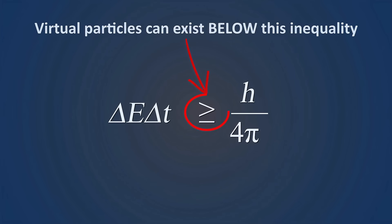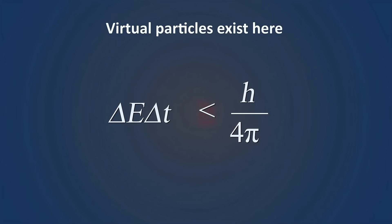But what this also means is that unmeasurable virtual particles can exist below this inequality. In other words, particles with a low enough energy that exist for a small enough time can exist as long as the product of the uncertainties is less than h over 4 pi. And this is the region where these virtual particles exist.